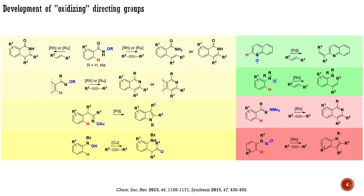So far, all the known C-H transformations enabled by oxidizing directing groups have been based on aromatic systems. Unfortunately, no oxidizing directing groups suitable for the oxidative C-H transformation of aliphatic compounds have been found yet. Hopefully, one of you will develop one in the future.